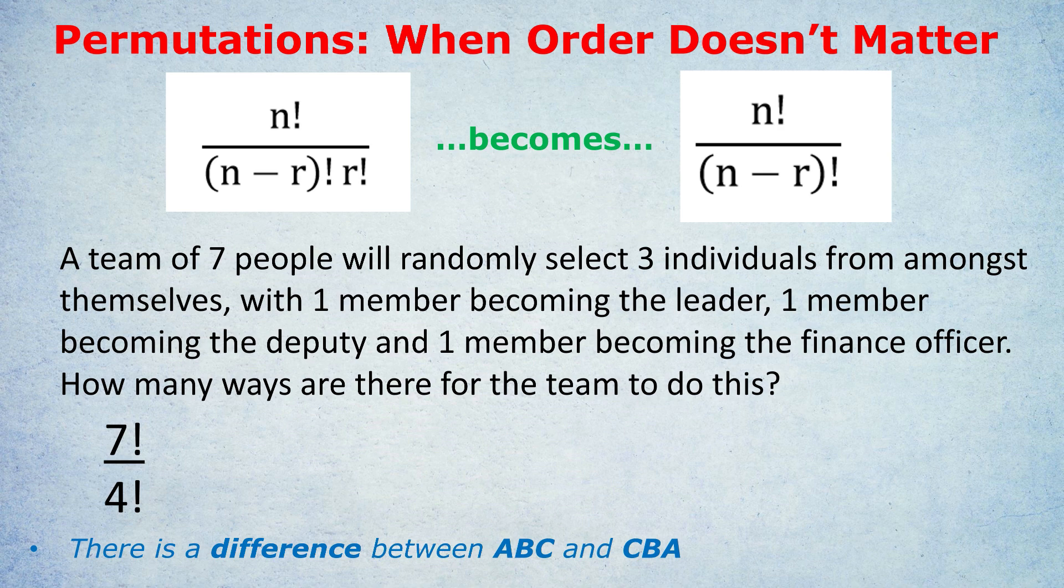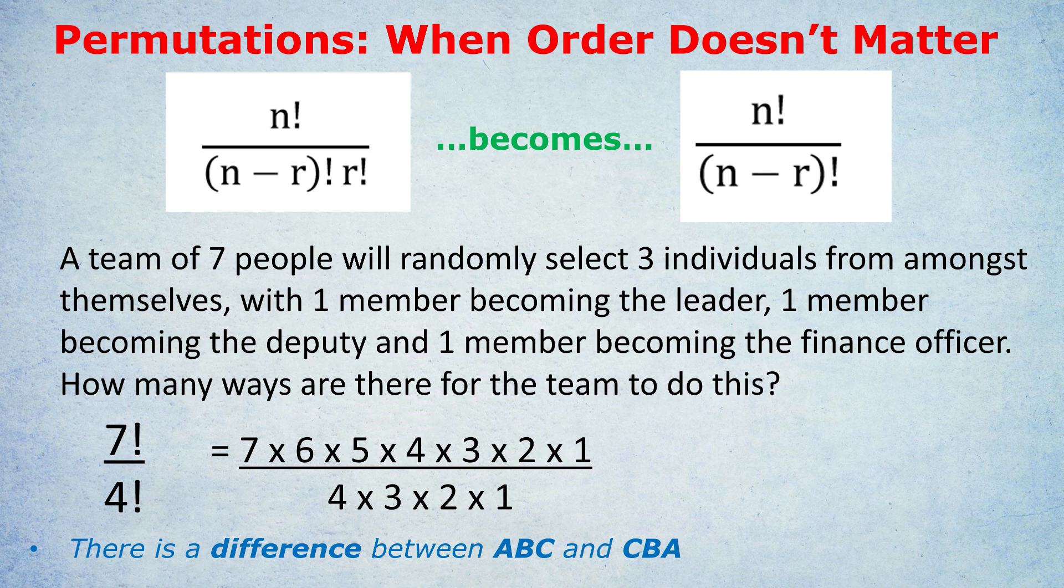How would you actually work that out? Well, seven factorial is just seven times six times five times four all the way, and four factorial is the same from four down. And then you can always cancel out massively. Fours cancel out, threes cancel out, twos cancel out, and ones don't matter anyway. So you're just left with seven times six times five in the numerator on the top. Seven times six times five is 210. So there are 210 different ways of doing this. Notice that will be a much bigger answer than if we're just randomly selecting three people from a total of seven.